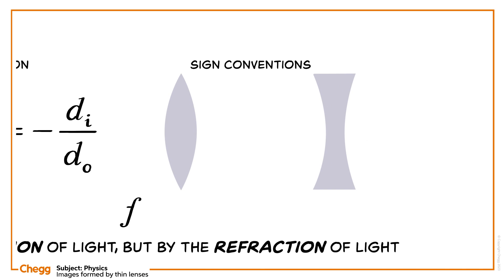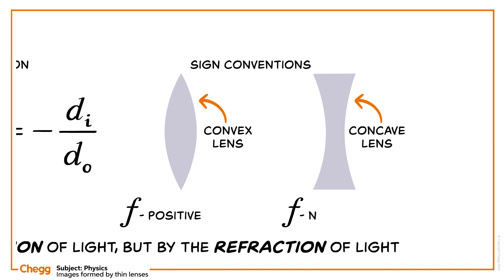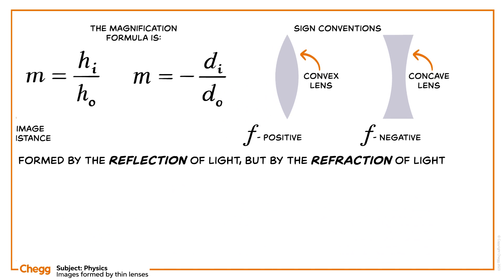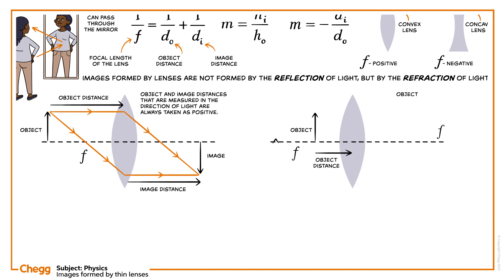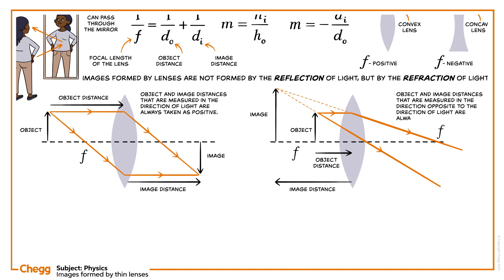The focal length of a convex lens is positive, while the focal length of a concave lens is negative. The object and image distances that are measured in the direction of light are always taken as positive. The object and image distances that are measured in the direction opposite to the direction of light are always taken as negative. We can see the images formed in the figure.